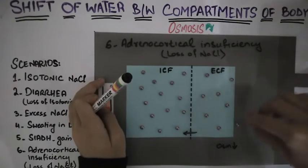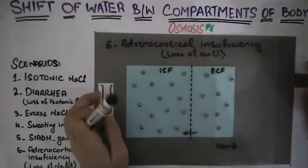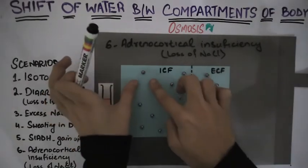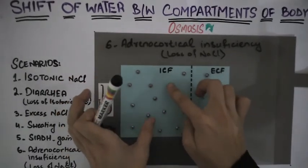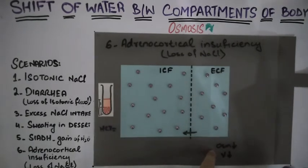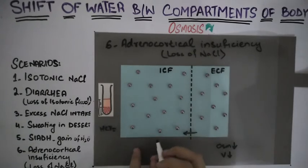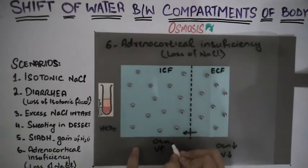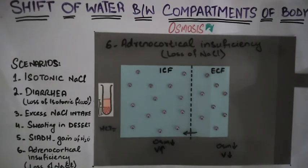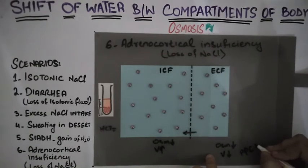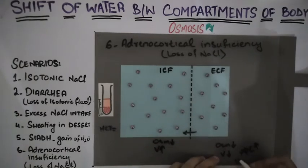Water will shift from ECF to ICF until the osmolarity of the two solutions becomes equal and they become isoosmotic. As a result, the volume of extracellular fluid has decreased and the volume of intracellular fluid has increased, resulting in a decrease in osmolarity of the intracellular fluid. Plasma protein concentration of the extracellular fluid will increase as its volume has decreased.